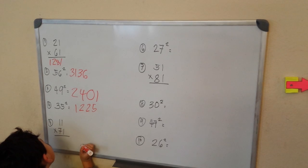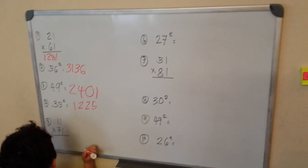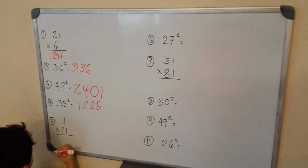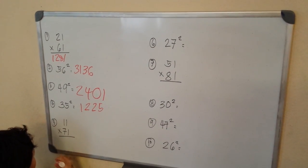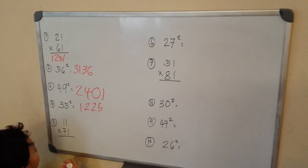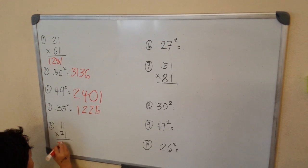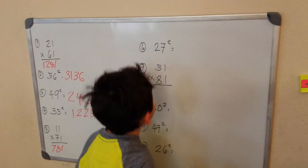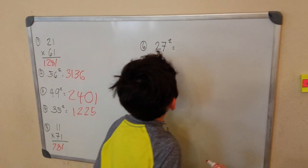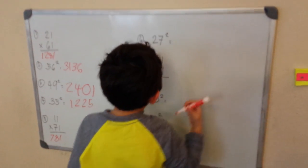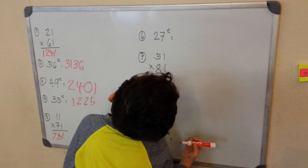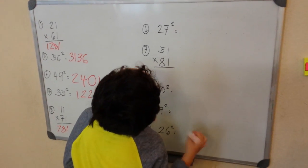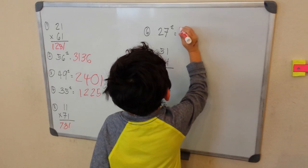11 times 71. 1 times 7 is 7, put this right here in 70. 1 plus 7 is 8, so 70 plus 8 is 78. 781. 27 squared is 729.